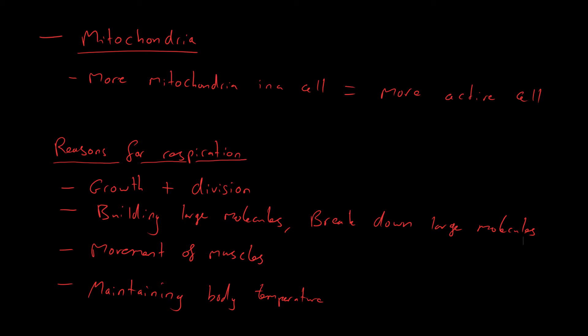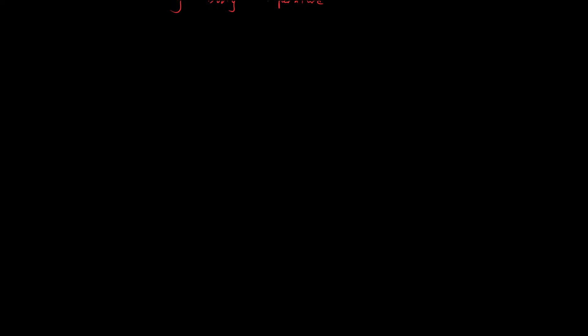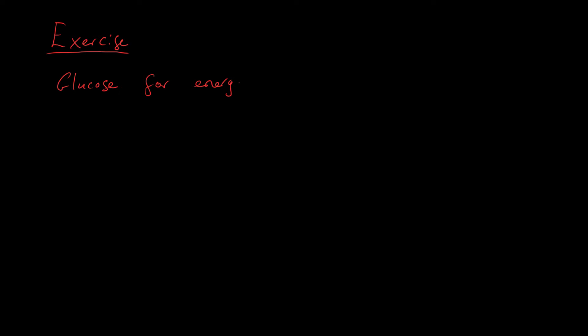Now let's look at exercise and the effects it has on our body. During exercise we're going to be using more energy than usual. We use the glucose in our blood, but also our muscles store glucose as glycogen. So we're using glucose for energy, and glycogen is broken down to form glucose in the muscles.